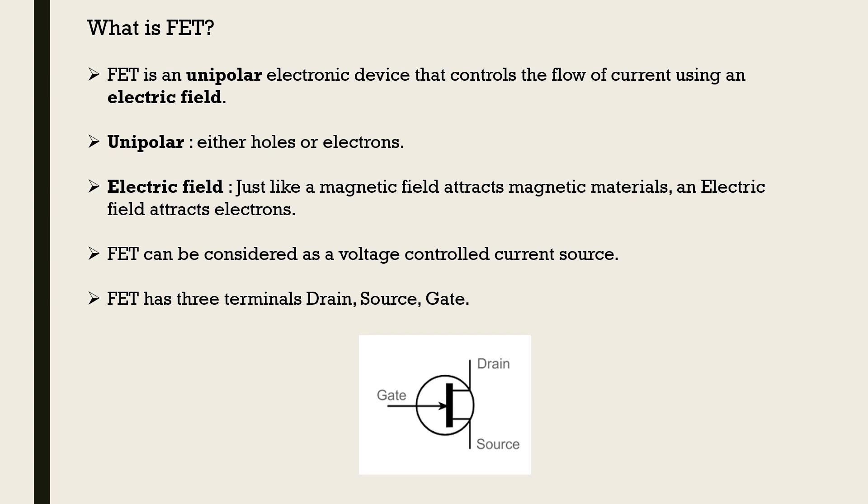So, what is an FET? By definition, FET is an unipolar electronic device that controls the flow of current using an electric field. By unipolar, we mean that the device uses or manipulates only one type of charge carrier, either holes or electrons. The use of electric field can be justified with the analogy of magnetic field. Just like a magnetic field attracts magnetic materials, electric field attracts electrons. FET can be considered as a voltage controlled current source. FET has three terminals and they are drain, source and gate. Below given is the symbol of a N-channel J-FET.